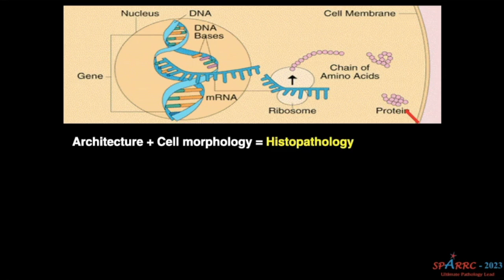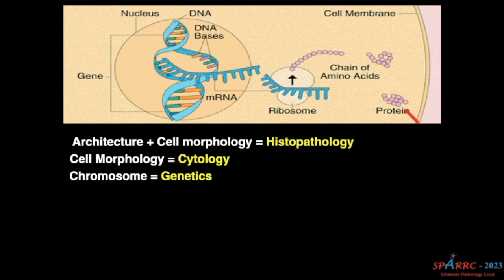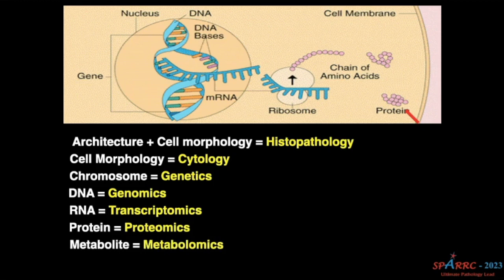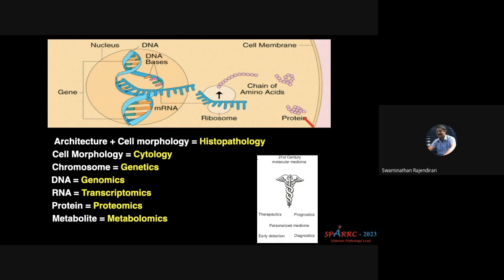When you see the architecture and cell morphology of a particular organ or lesion it is known as histopathology. When you see only cell morphology it is known as cytology. When you look into chromosomes it is genetics, and when you look into the DNA it is genomics. When you study the RNAs that science is known as transcriptomics, and when you read the proteins it is known as proteomics.